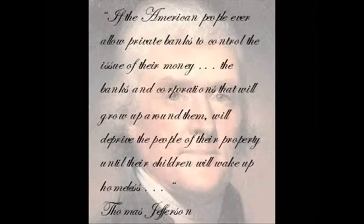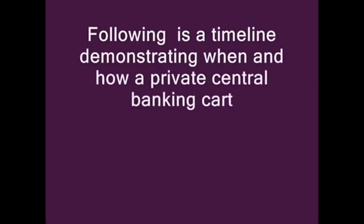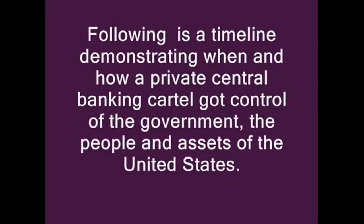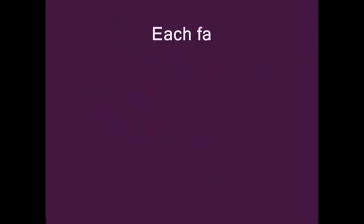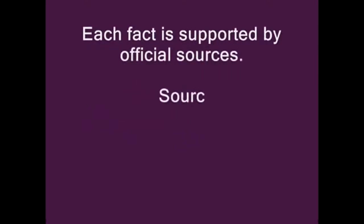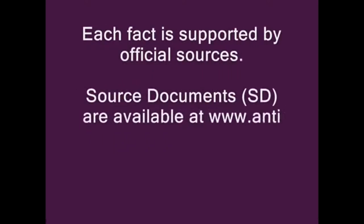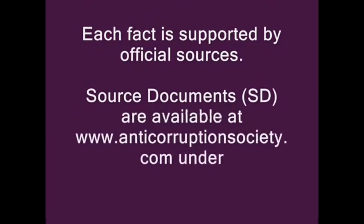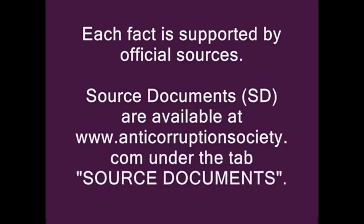If the American people ever allow private banks to control the issue of their money, the banks and corporations that will grow up around them will deprive the people of their property until their children will wake up homeless. — Thomas Jefferson. Following is a timeline demonstrating when and how a private central banking cartel got control of the government, the people, and the assets of the United States. Each fact is supported by official sources. Source documents are available at www.anticorruptionsociety.com under the tab 'source documents.'